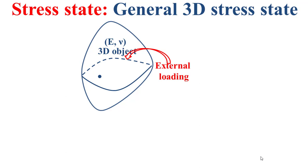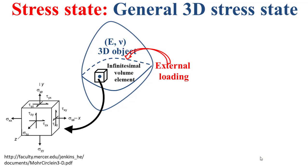Let's consider the point indicated here by the blue point, and let's examine the 3D stress state at this point. If we consider a cubic infinitesimal volume element around this point, the 3D stress state will be defined as depicted by the figure on the left of this slide. As you can note, here we have two kinds of stresses.